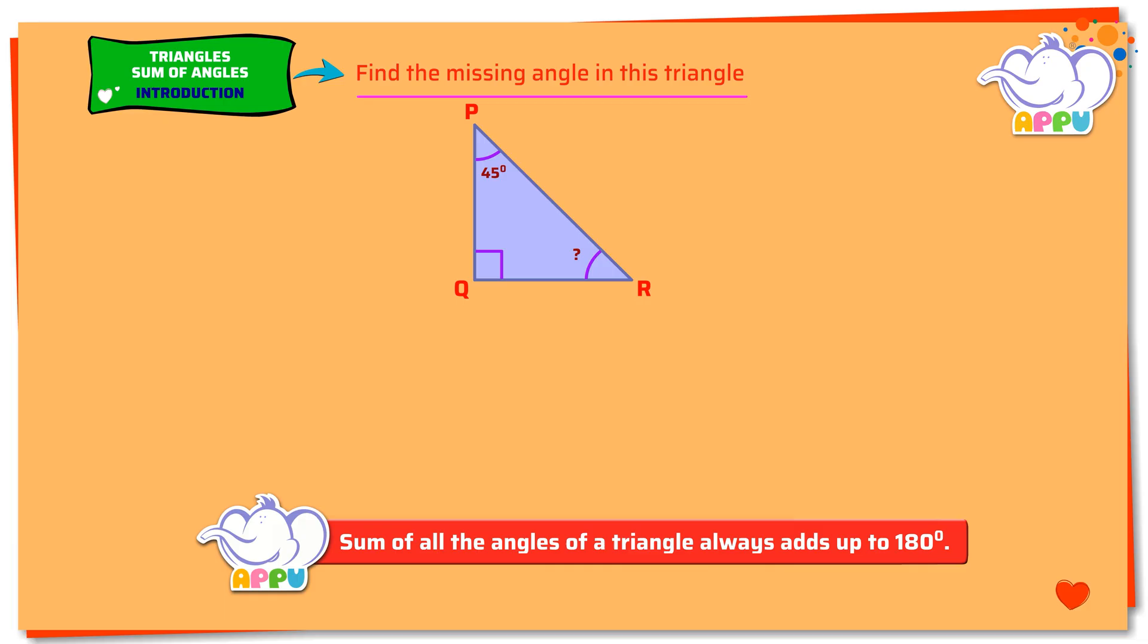In this triangle PQR, we see that angle P equals 45 degrees and angle Q equals 90 degrees. We need to find angle R. Note that a perpendicular symbol is used to denote 90 degrees.